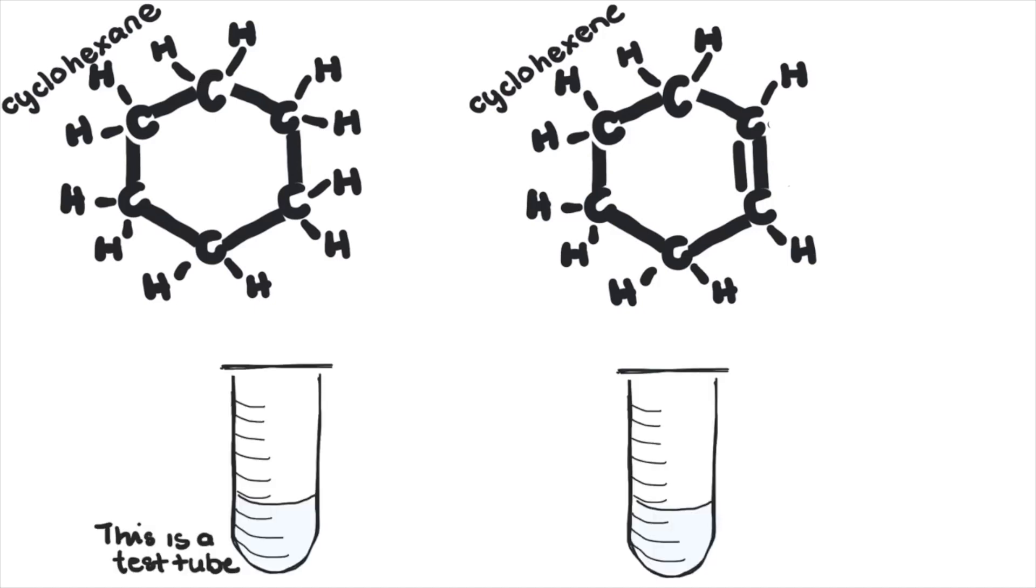both samples should be clear. Right now the most obvious difference is the presence of that reactive double bond. On a side note, we use these cyclic forms because hexane and hexene are really volatile and you don't really want those poisonous fumes getting into your nose.